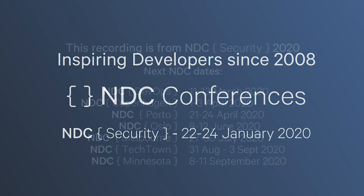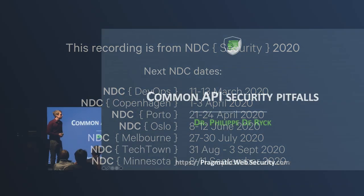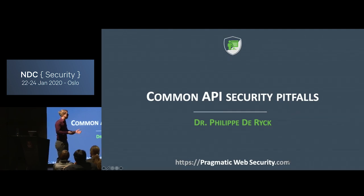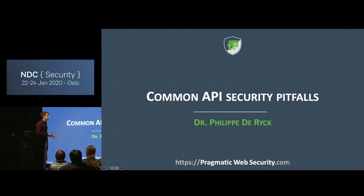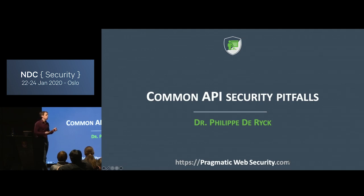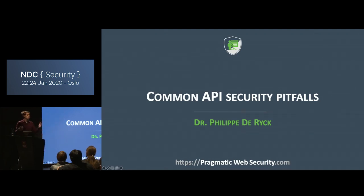Welcome. Nice to see a full room at the end of the conference. I promise I'll make it worth your time to stick around until the end. We're going to talk about common API security pitfalls. Everybody today is building APIs — single page applications backed by an API, maybe a mobile or desktop application, but it's going to be backed by an API. I'm going to talk about security, about things that might go wrong, things I've seen go wrong in real APIs, whether personally or published online.